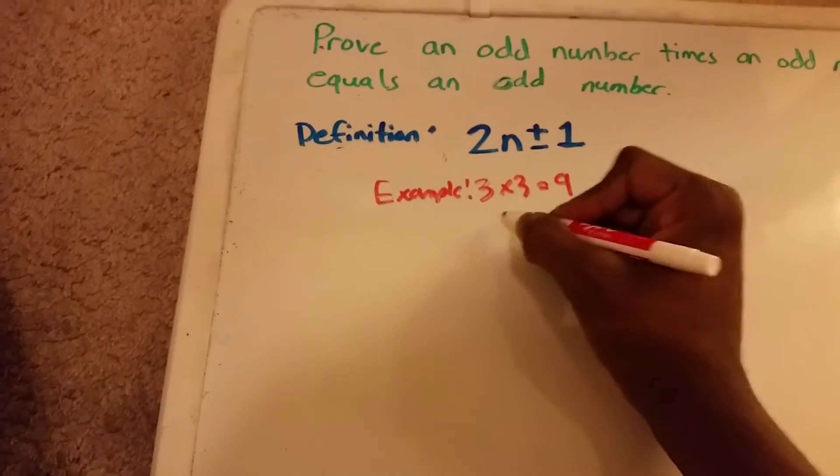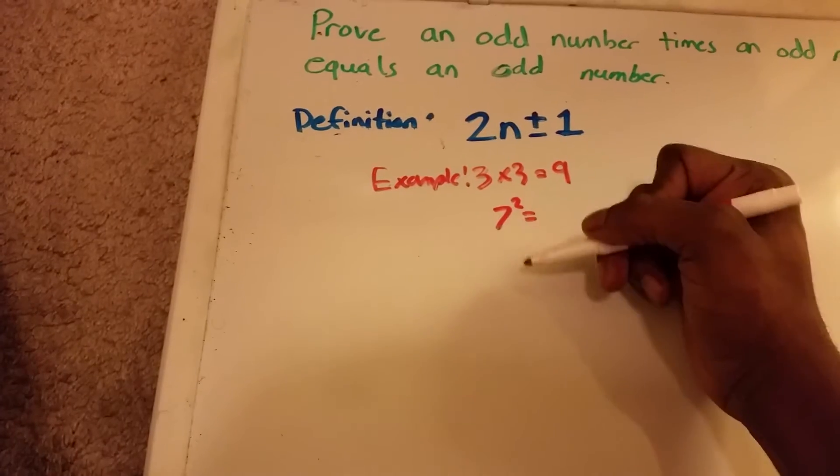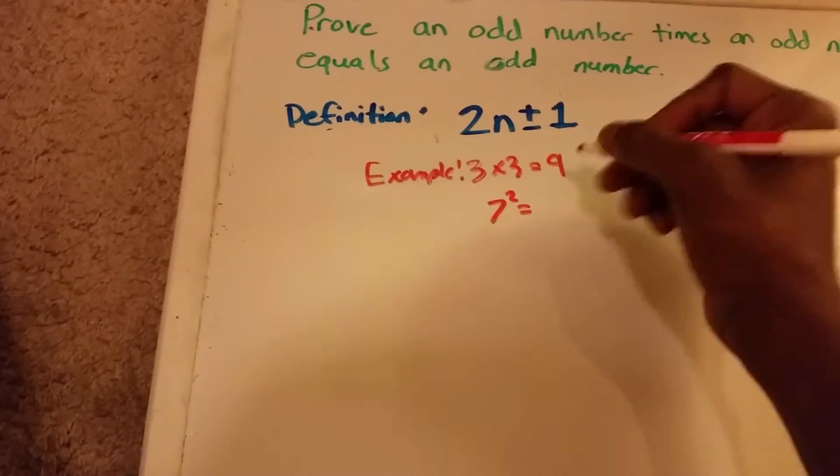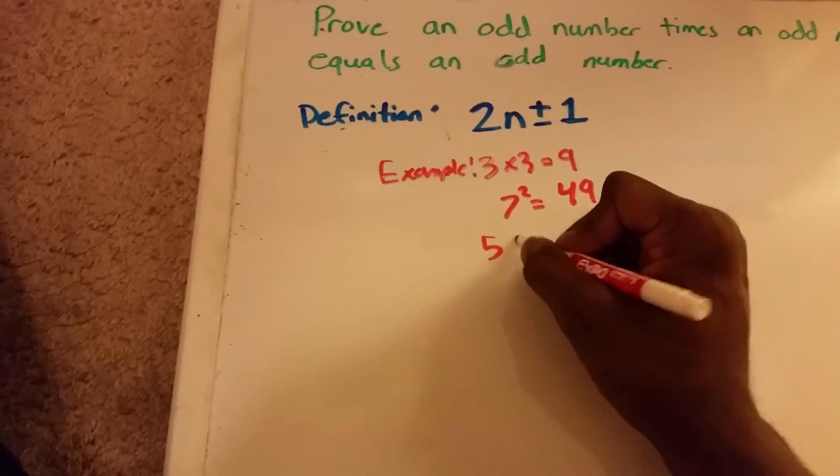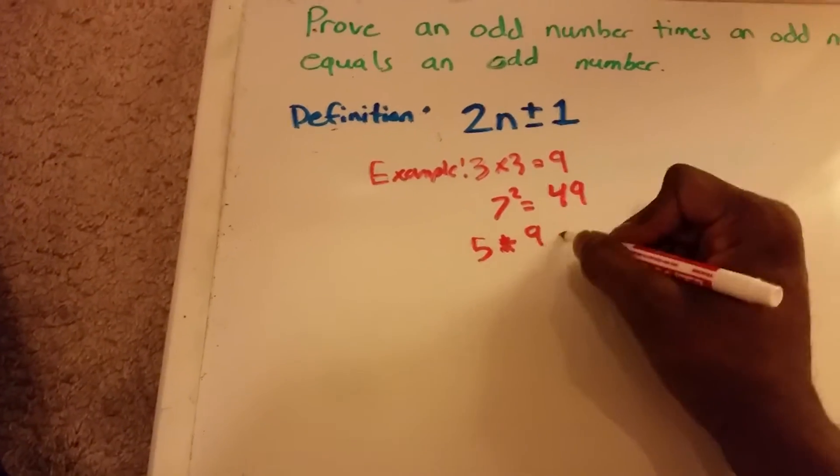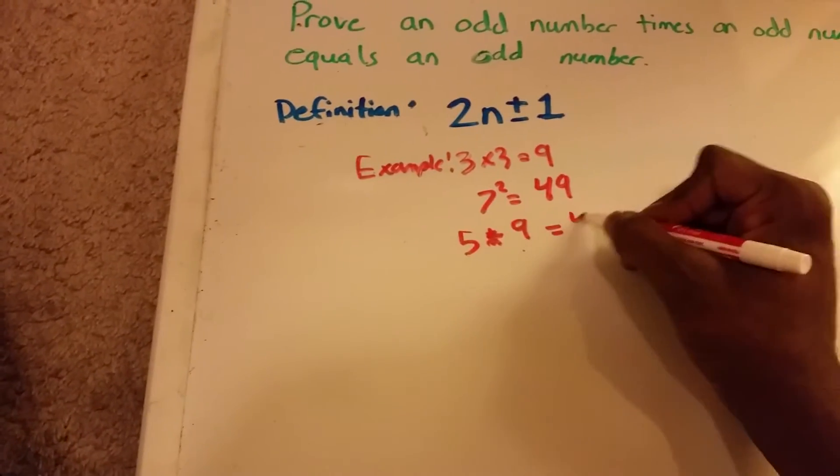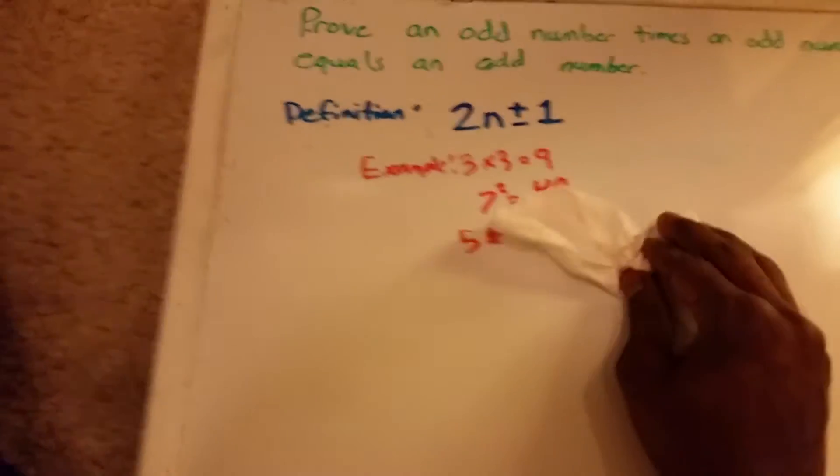We also have maybe 7 squared. 7 is an odd number and squared means it's multiplied by itself, so you have 7 times 7. You get 49, an odd number. Let's do 5 times 9, an odd number times an odd number. We get 45. So you can see that it's looking like this is probably true.